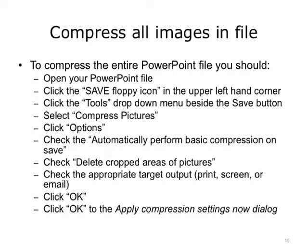To compress the entire PowerPoint file you should: 1. Open your PowerPoint file. 2. Click the Save floppy icon in the upper left-hand corner. 3. Click the Tools drop-down menu besides the Save button. 4. Select Compress Pictures. 5. Click Options. 6. Check Automatically Perform Basic Compression on Save. 7. Check Delete Cropped Areas of Pictures. 8. Check the appropriate target output — print, screen, or email. 9. Click OK. 10. Click OK to the Apply Compression Settings Now dialog.